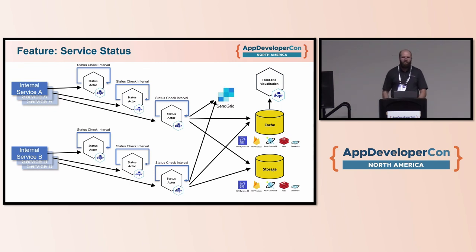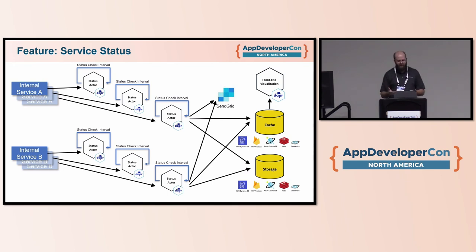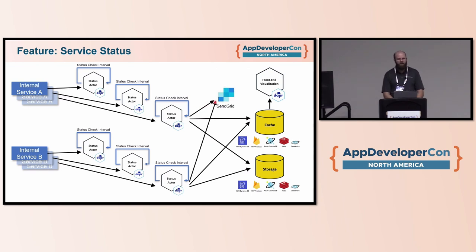Finally, service status monitoring is a great use for actors. Use the reminder to say: I've created this service — register it with an actor that's going to check on it every five minutes. Every five minutes it triggers a check against that service to see if it's live. Maybe you have your actor deployed to multiple regions so you can check from all those regions. If the status check fails, send an email — I want to know before the customer notices there's a problem. Cache the results so you have visibility into your actual uptime as validated by your own software, and save them so you know if something has been failing consistently in one region.